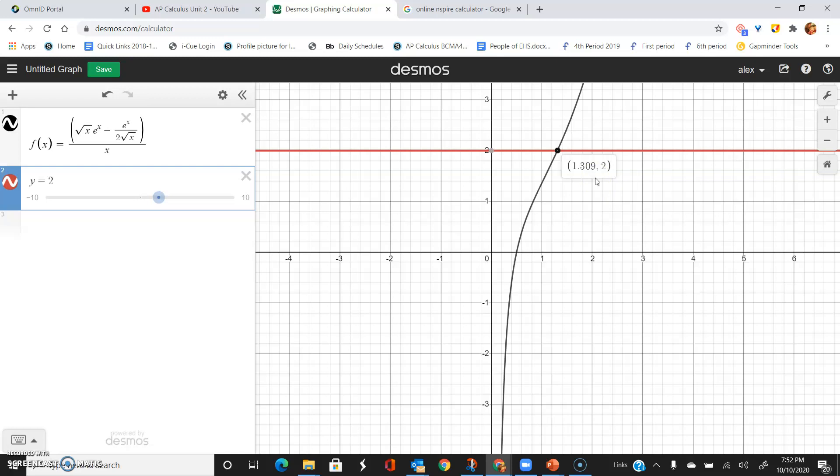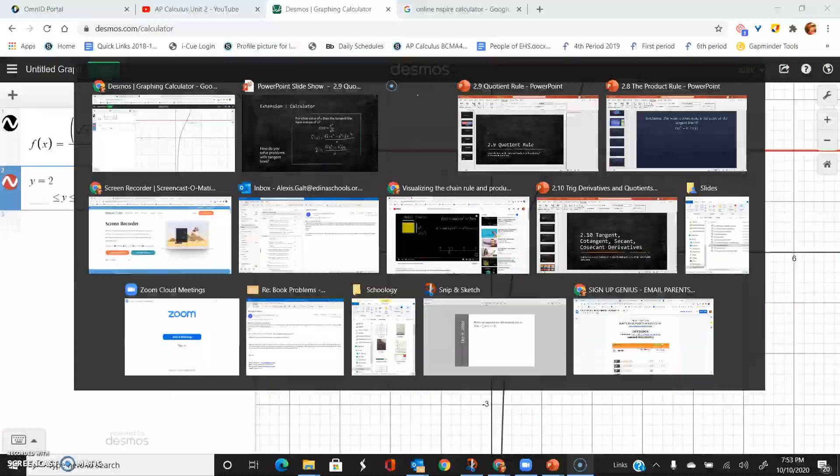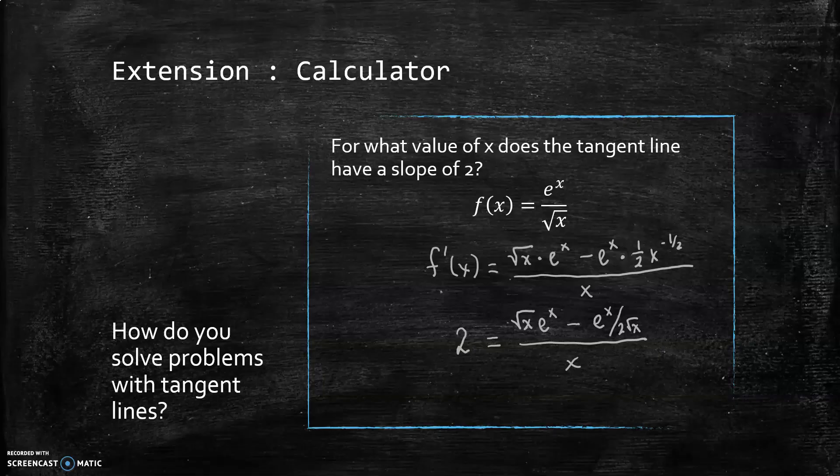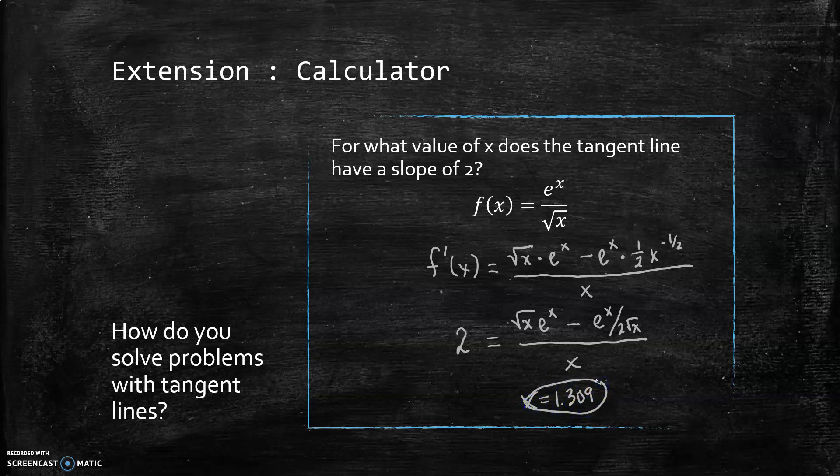This is a method you're going to use on your graphing calculator a lot, where you're trying to find out where one function is equal to another or where one function is equal to a number. The easiest way to do that is by finding the intersection point. I'm going to go through the process for doing that on a calculator too because I know that's not intuitive necessarily. So our answer would be 1.309, and I'll show you how to get that on the calculator as well.